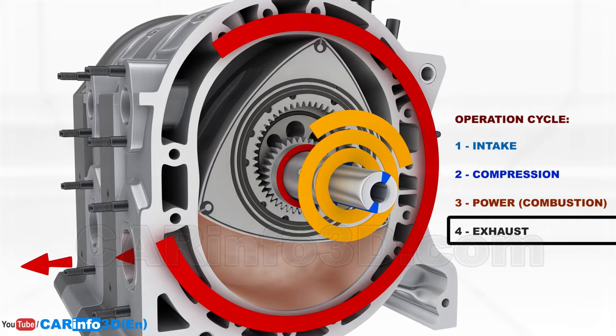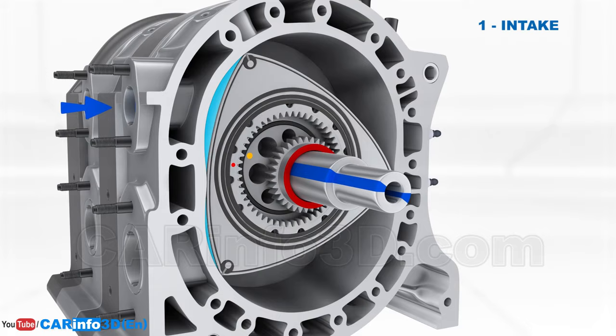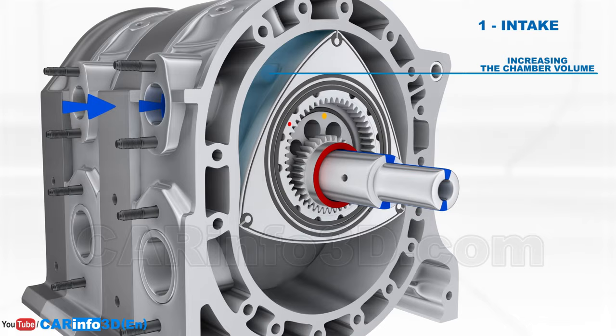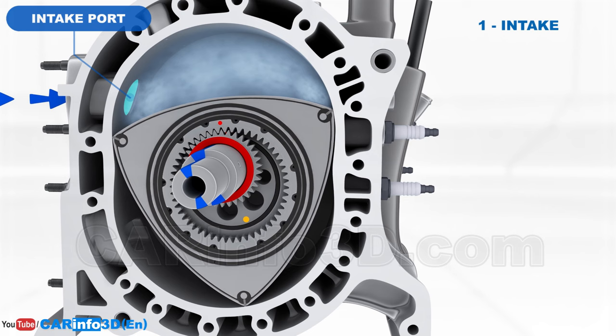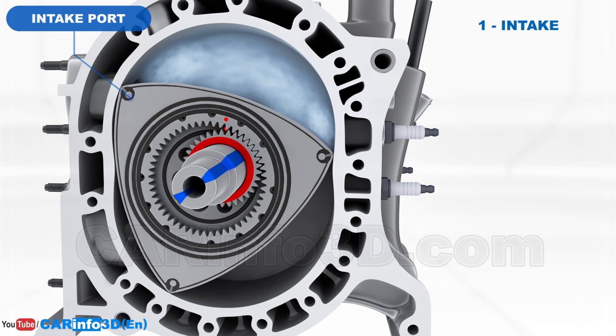During the first stroke, the intake, the rotor turns, thus increasing the volume of the working chamber, which is defined by the relative position of the rotor housing and the rotor. This generates vacuum pressure, which draws in the fuel-air mixture via the intake port. At the end of the stroke, the rotor closes off the intake port.